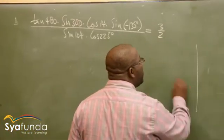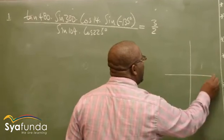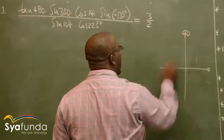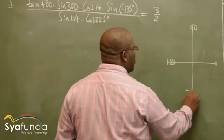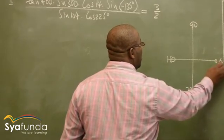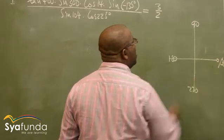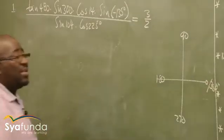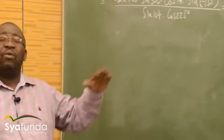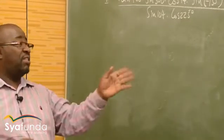If you've got the unit circle, you know 0, you know 90, you know 180, you know 270, and back to 360. So the angles we are dealing with on the unit circle are apart from 0 and 360.